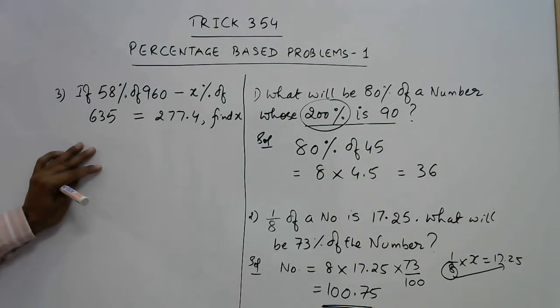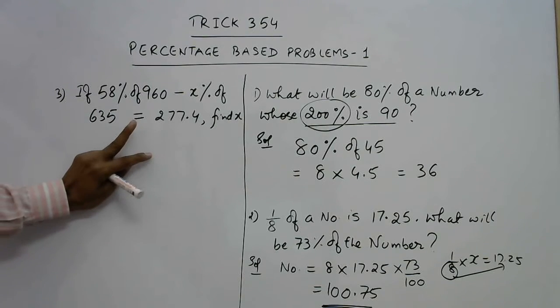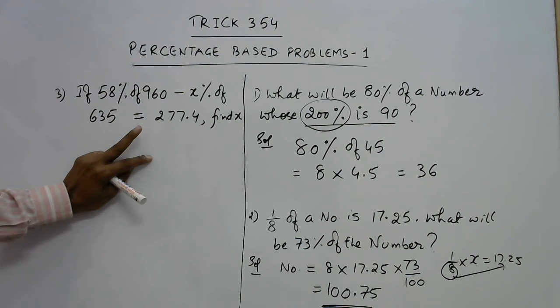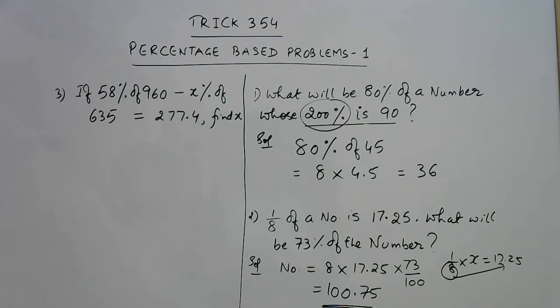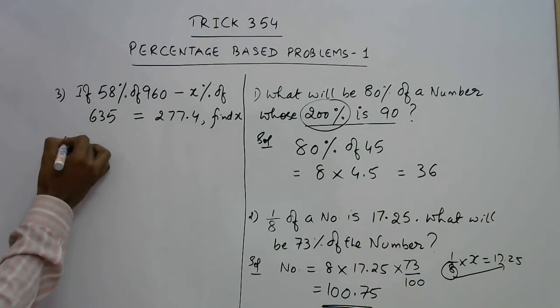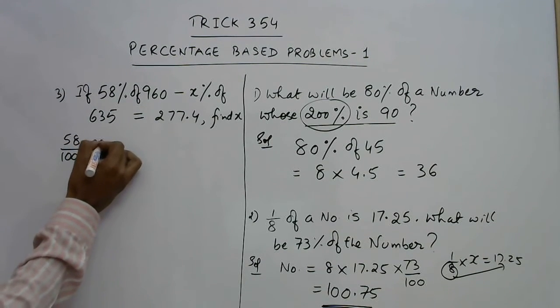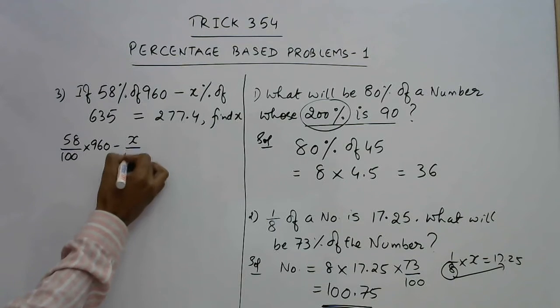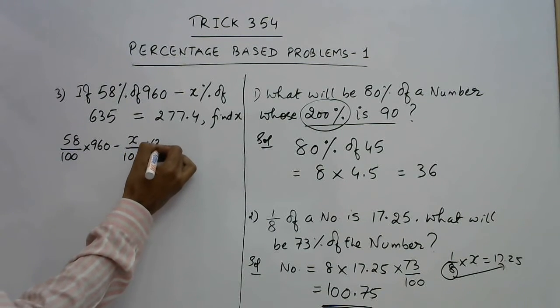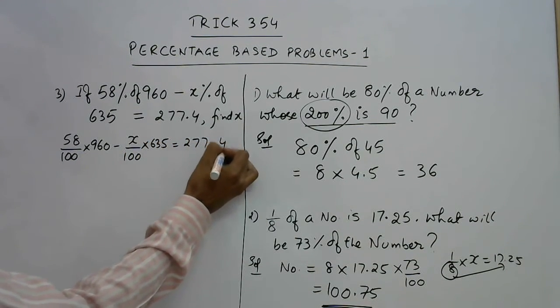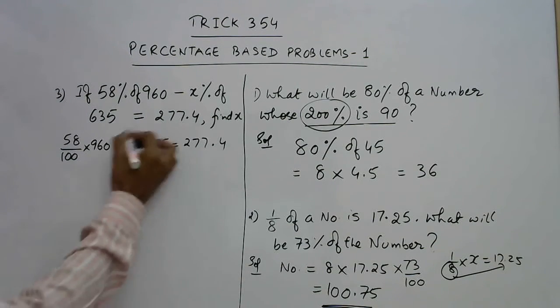Now let us have one more question. In this question we are asked if 58% of 960 minus x% of 635 is 277.4, then you need to find the value of x. Obviously you need to frame an equation here: 58 upon 100 into 960 minus x upon 100 into 635 equals 277.4.